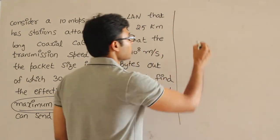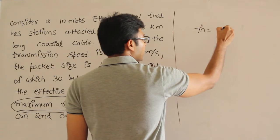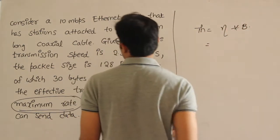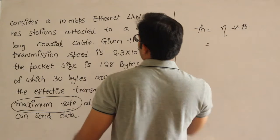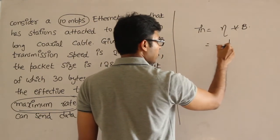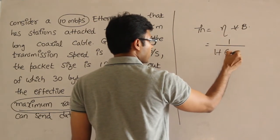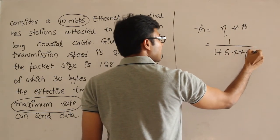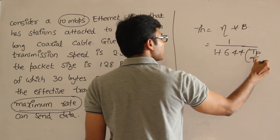The maximum rate is throughput, and throughput equals efficiency times bandwidth. Bandwidth is given as 10 Mbps. In order to find out the efficiency of Ethernet, the formula is 1/(1 + 6.44A), where A is Tp/Tt.